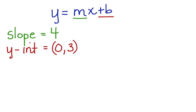Let's say that you've been given the information that the slope of a line is 4 and the y-intercept is (0, 3), meaning that the line crosses the y-axis at positive 3.